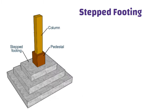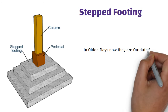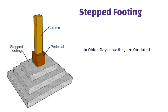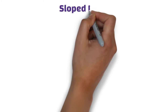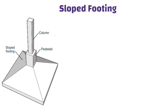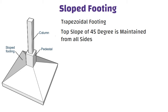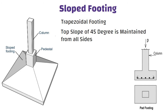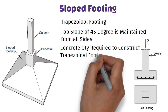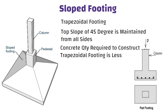Stepped footing: this type of footing was constructed in olden days and is now outdated. You can see in this picture — three concrete cross sections are stacked upon each other, forming steps, that's why it is called stepped footing. Sloped footings are also known as trapezoidal footings. They are designed and constructed with great care to see that a top slope of 45 degrees is maintained from all sides. When compared with pad footings, the concrete quantity required to construct trapezoidal footings is less, so we can save the cost of concrete and steel.